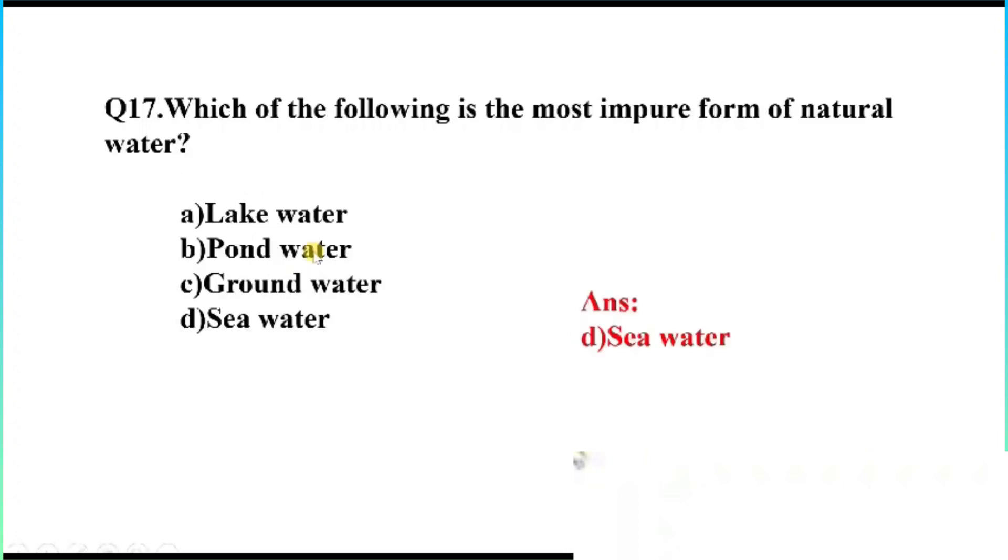Question number 17. Which of the following is the most impure form of natural water? Option A, lake water. B, pond water. C, ground water. D, sea water. The right answer, Option D, sea water.